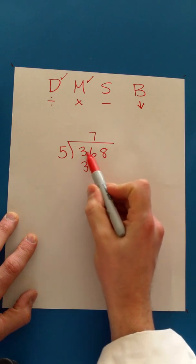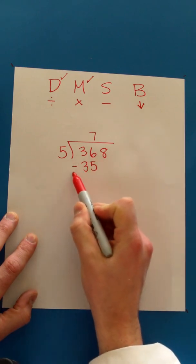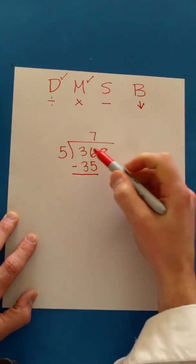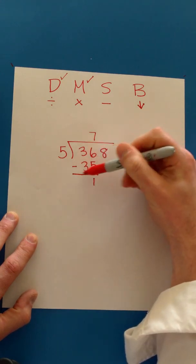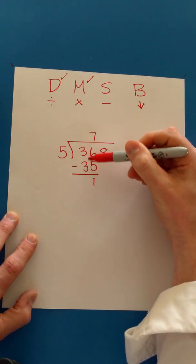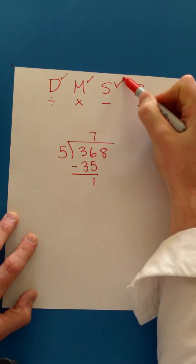Now let's subtract. 36 take away 35 is 1. This should always be a mental math question. We've just finished subtracting.